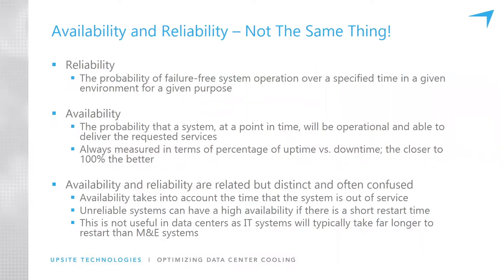We tend to use the terms availability and reliability somewhat synonymously, but they're actually not the same thing. Reliability is the probability of a system operating failure-free over a period of time. Availability is the probability of a system being operational throughout a period of time. They are related but distinct and often confused. When talking about data centers, we should really be talking about service availability rather than just reliability.